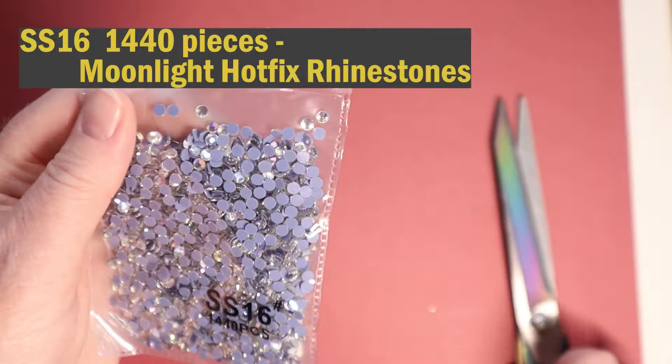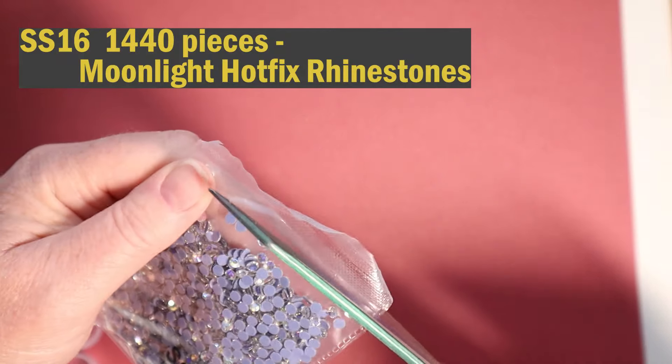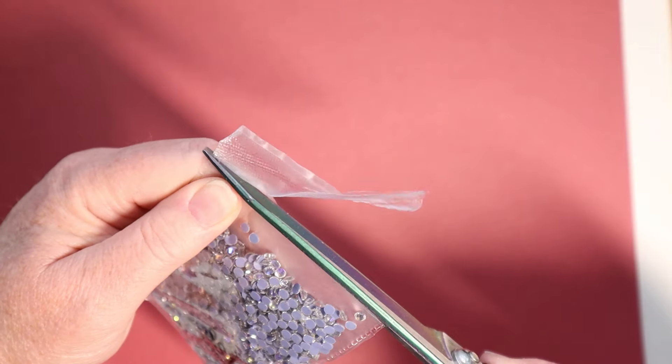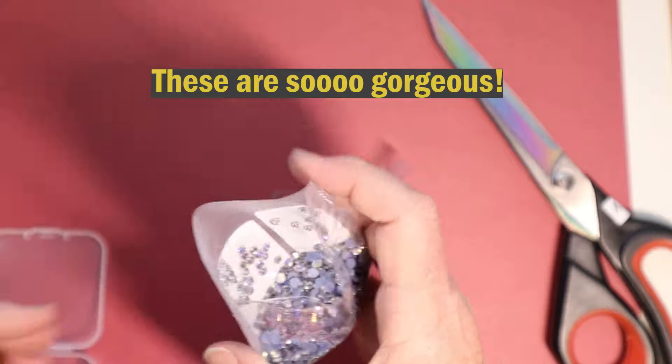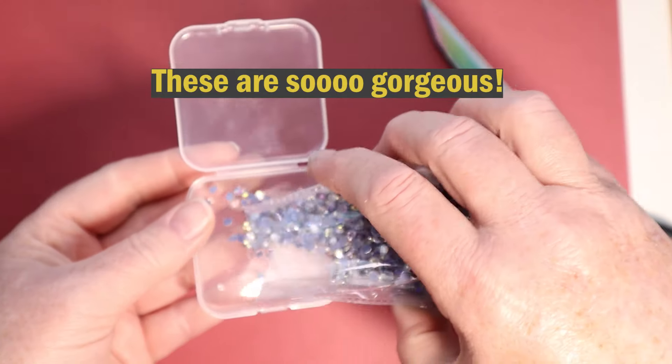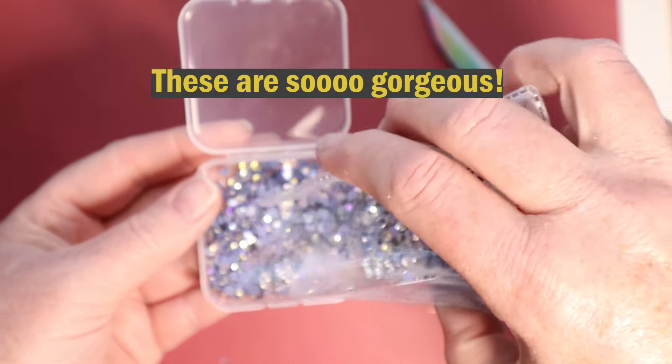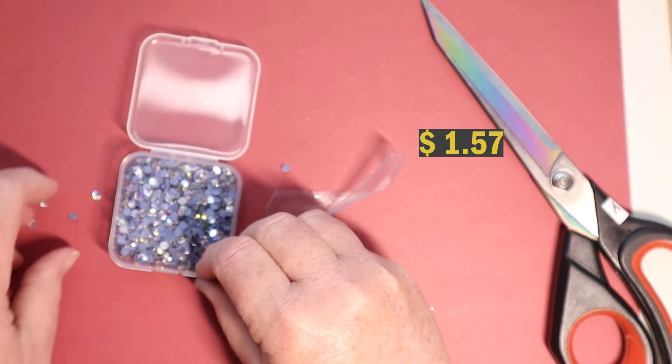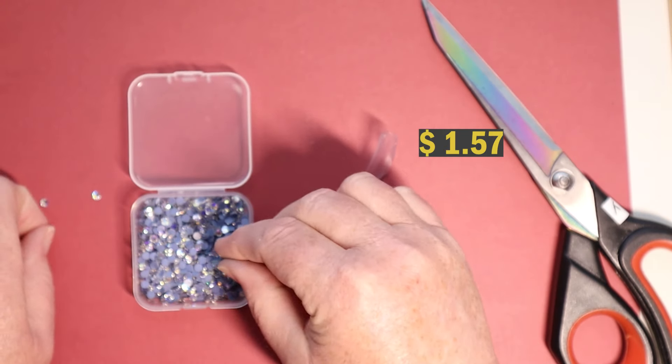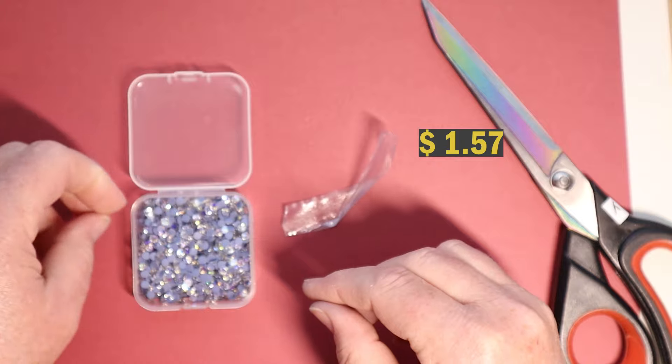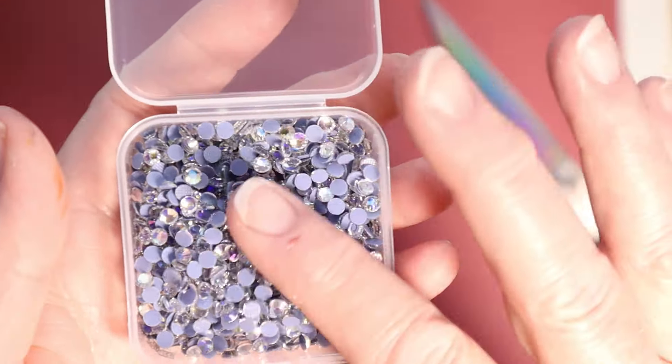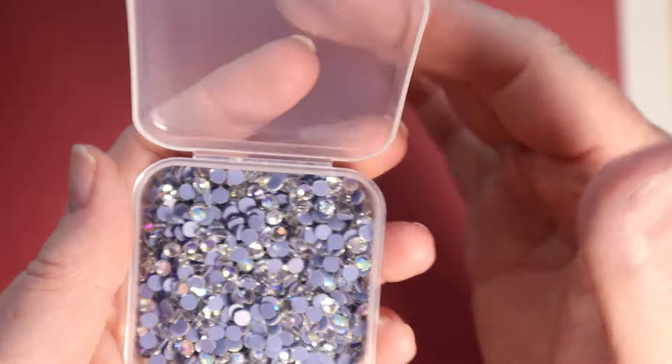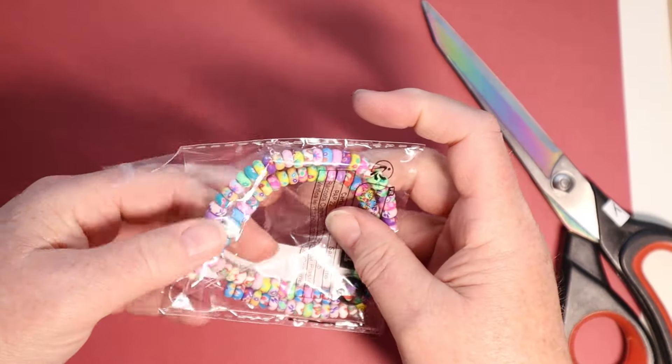Some more hot fixed rhinestones. This is called moonlight. It's a kind of a crystal-y iridescent color. They are gorgeous. If you get these, these are another one of those you can iron on a shirt or a hat, or you can just glue them on a project. And these are so pretty. They just really, really shine. And there's a lot of these. There's like 1,440.